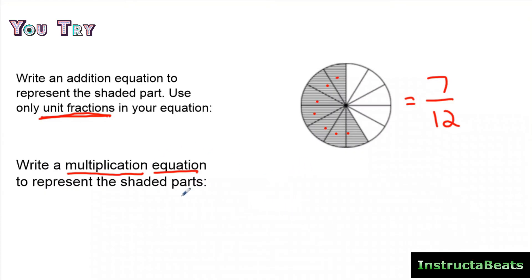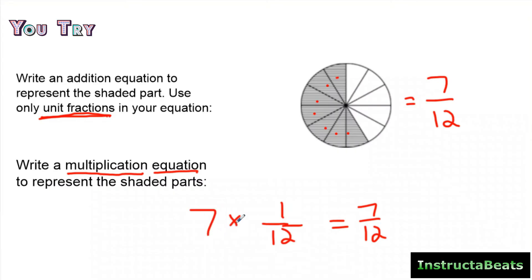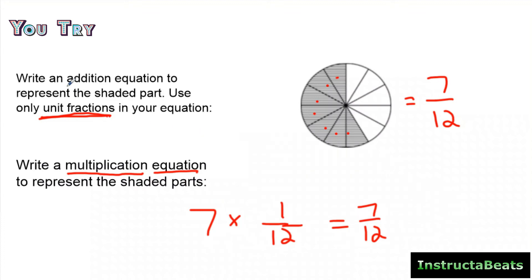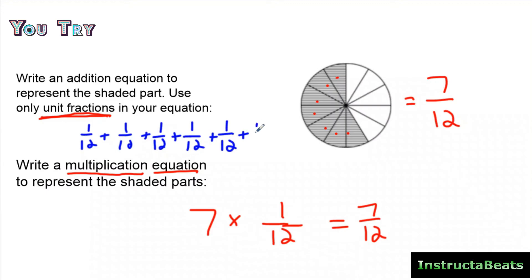My unit fraction would be one-twelfth. How many groups of one-twelfth do I need? Since my numerator is seven, I need seven groups. So the multiplication equation is seven groups of one-twelfth equals seven-twelfths. The addition equation is one-twelfth plus one-twelfth plus one-twelfth plus one-twelfth plus one-twelfth plus one-twelfth plus one-twelfth — seven groups of one-twelfth equals seven-twelfths.